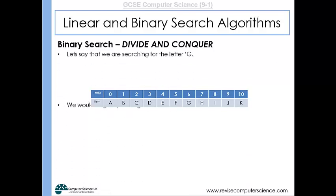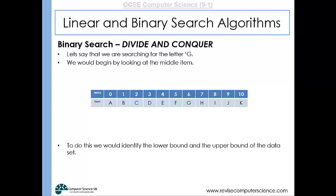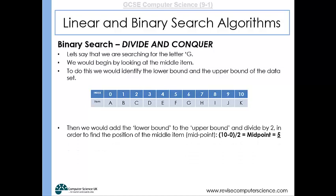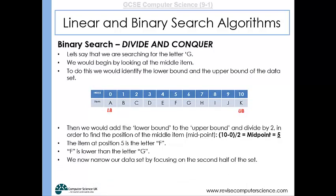Here's an example of the binary search algorithm. We're looking for the letter G. We first identify the lower bound and upper bound of the data and add them together, then divide by 2 to find the midpoint. If the lower bound is 0 and the upper bound is 10, we do 0 plus 10 divided by 2, giving a midpoint of 5. The middle value we look at first is therefore F.